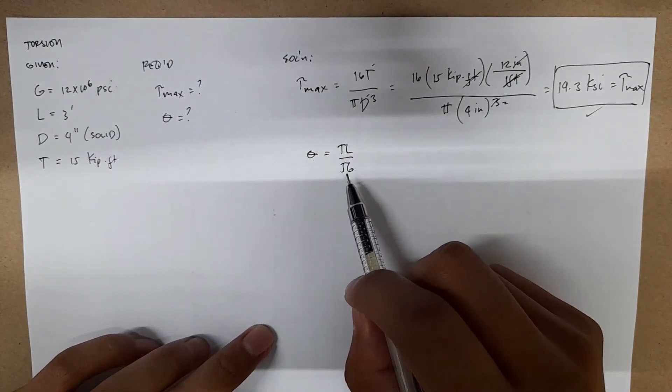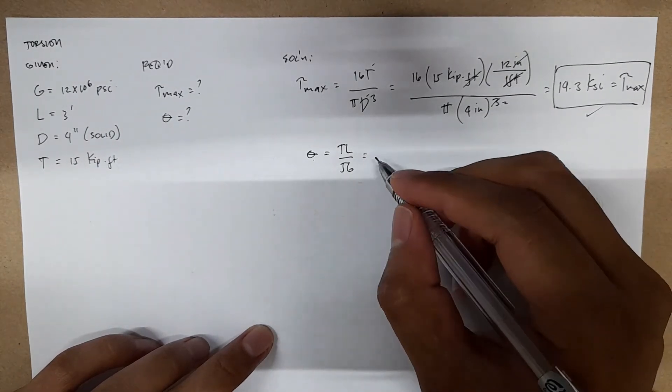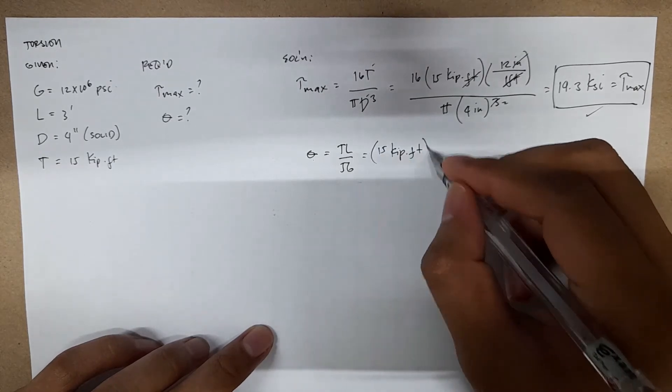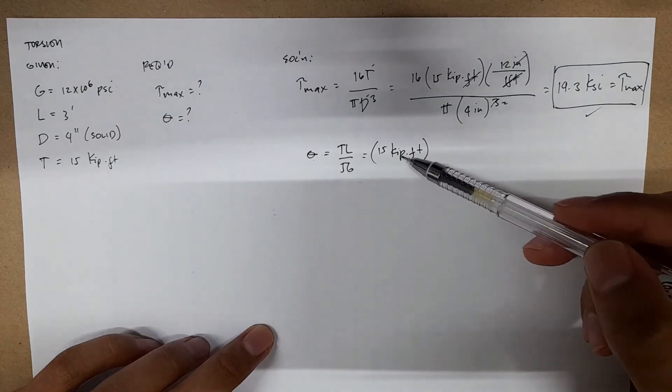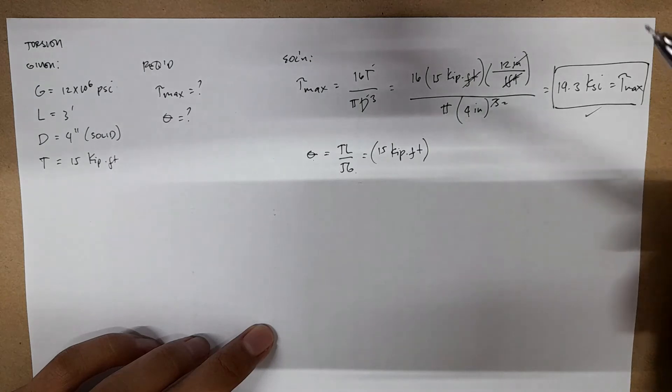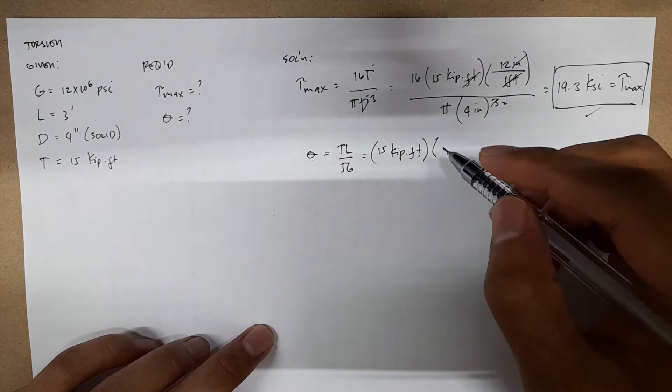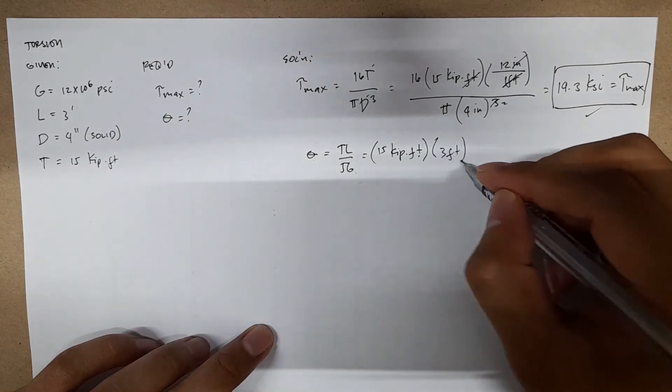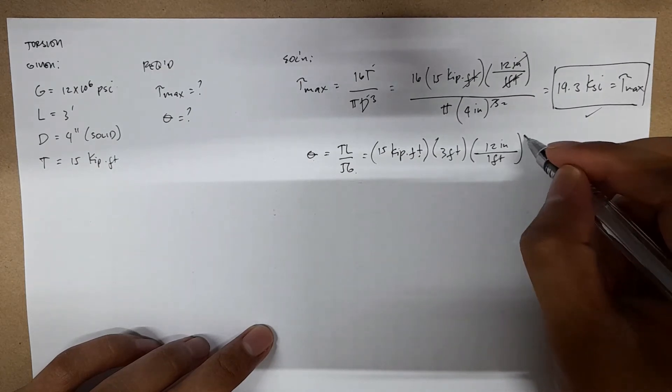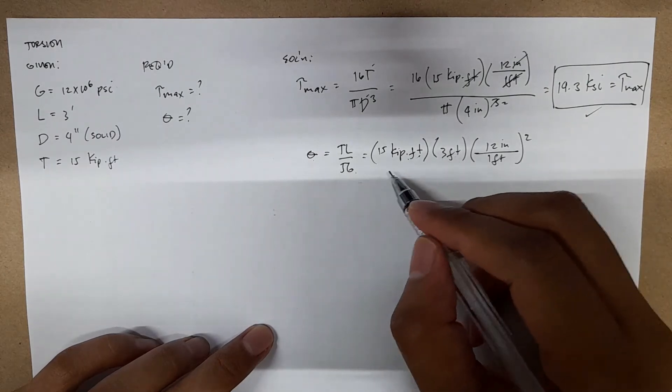So again, direct substitution of the torque, the length, the J, and the G. We have torque equals 15 kip-feet. We can keep kip because we can express G in terms of KSI, so we only need to convert these feet—times 3 feet. 1 foot is 12 inches, squared because we have 2 entities in feet.